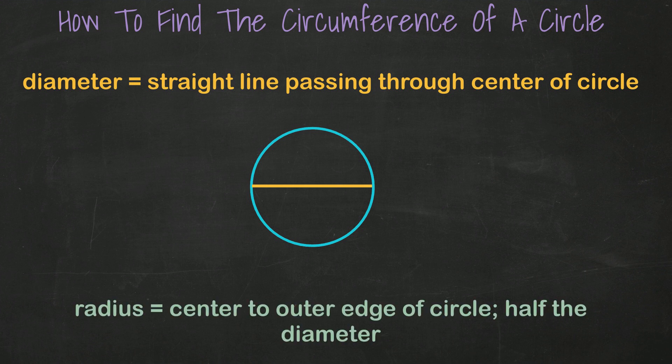The radius is a line that goes from the center of a circle to the outer edge. The radius is always half of the diameter.